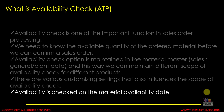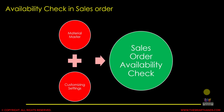This availability check is always done on the material availability date, not on other dates like delivery date or transportation planning date. There are two factors that determine the availability check within the sales order: one is the material master setting, and the other is the customizing setting. In the material master under the sales general tab page, we can maintain what type of availability check we want to set up for a product code.